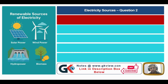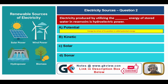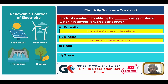Question number two: electricity produced by utilizing the dash energy of stored water in reservoirs in hydroelectric power. Options: A) potential, B) kinetic, C) solar, D) sonar. Potential energy is energy by virtue of its position. Kinetic energy is energy by virtue of its motion.